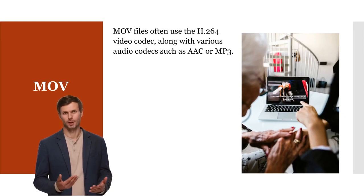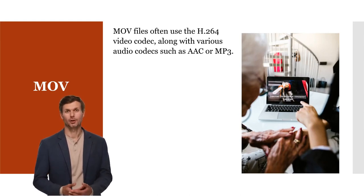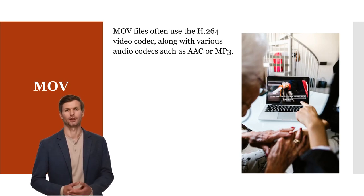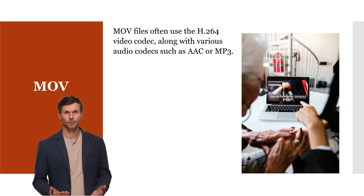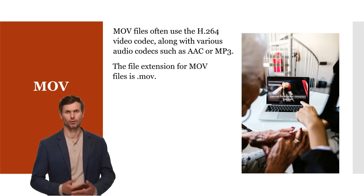They can also be played on Windows and other platforms with compatible media players, though support may vary depending on the codecs used within the MOV file. MOV files often use the H.264 video codec for compression, along with various audio codecs such as AAC or MP3. The file extension for MOV files is .mov.